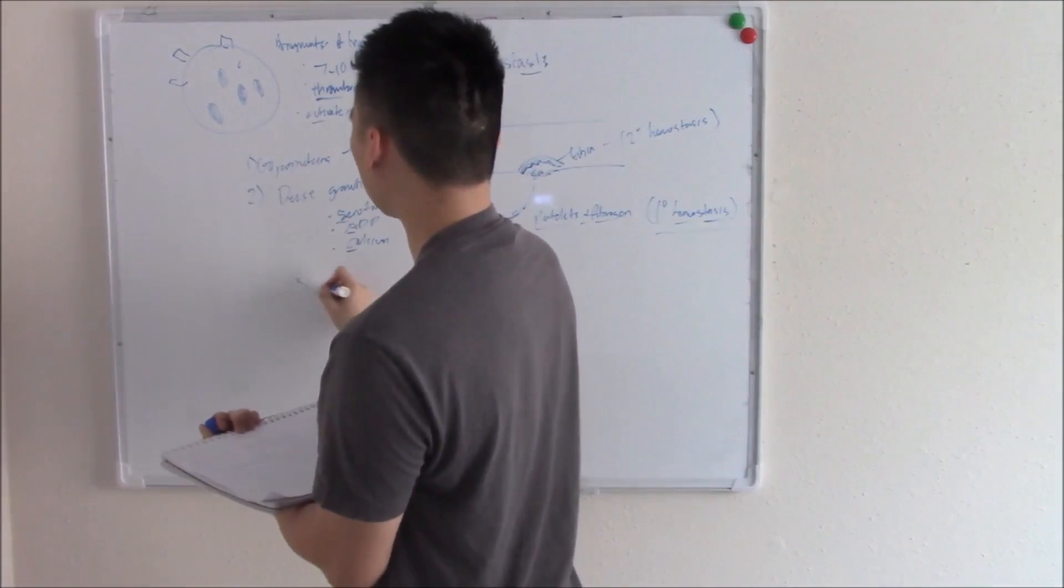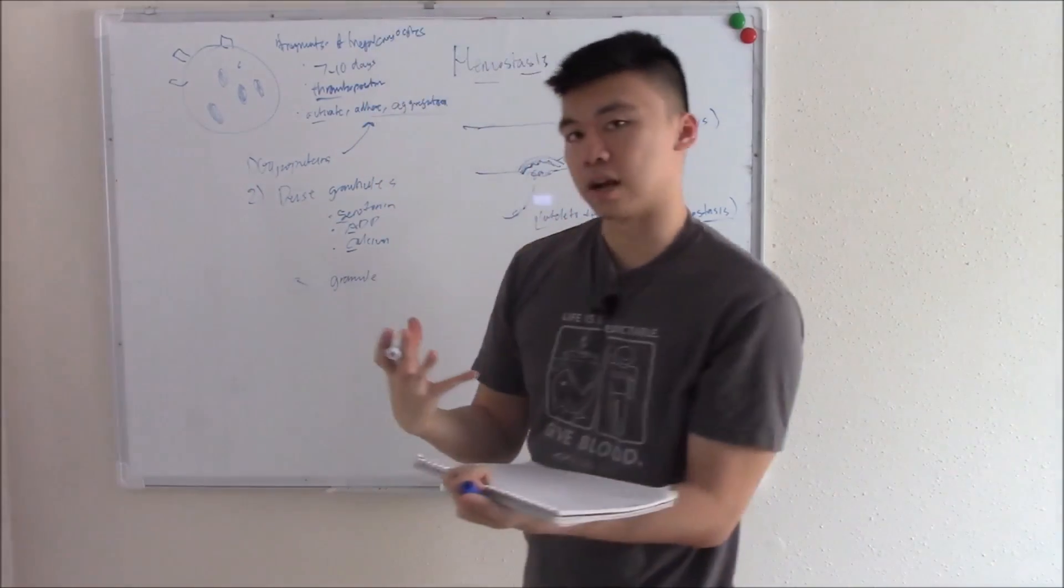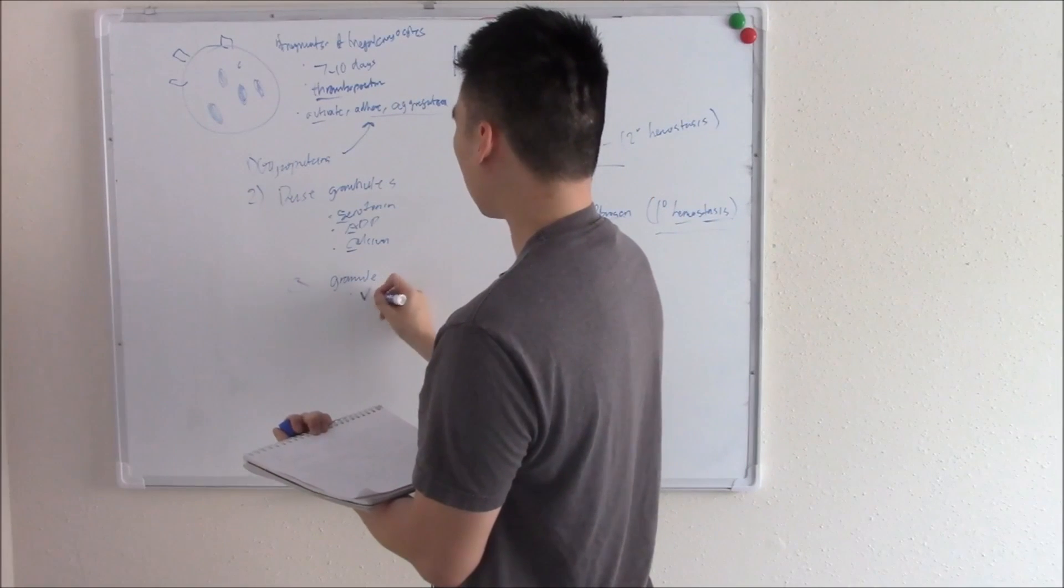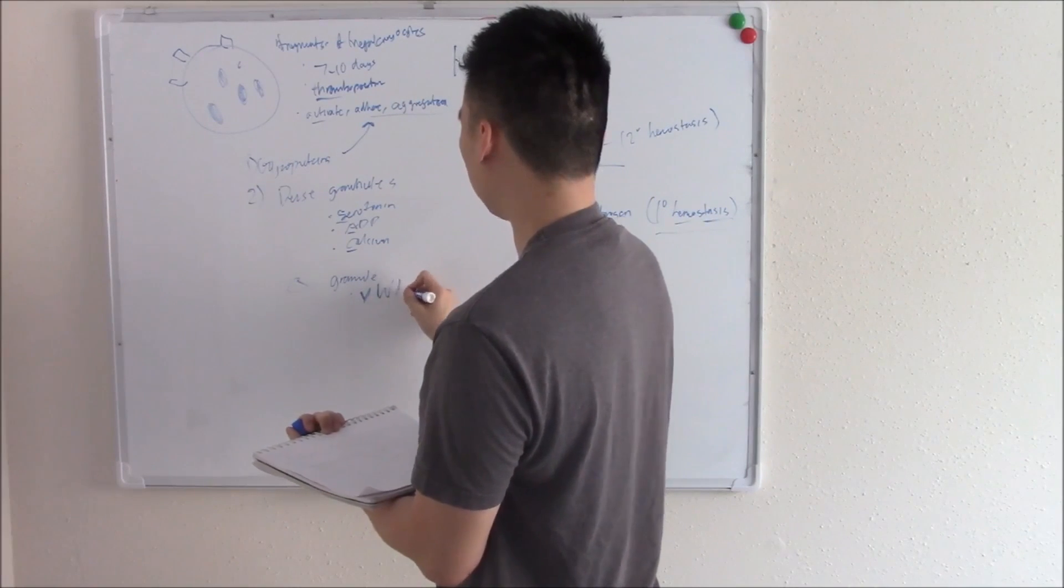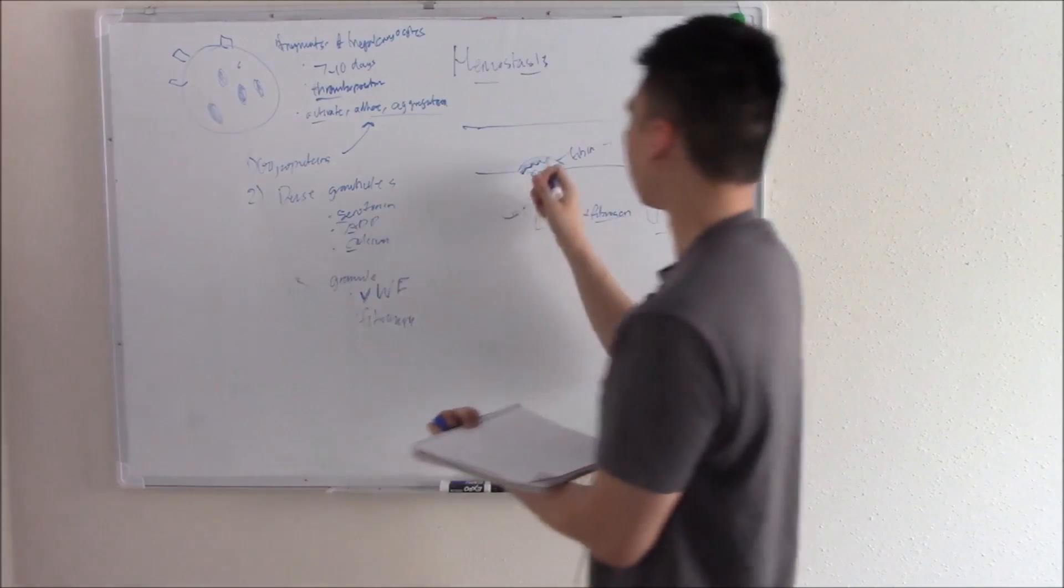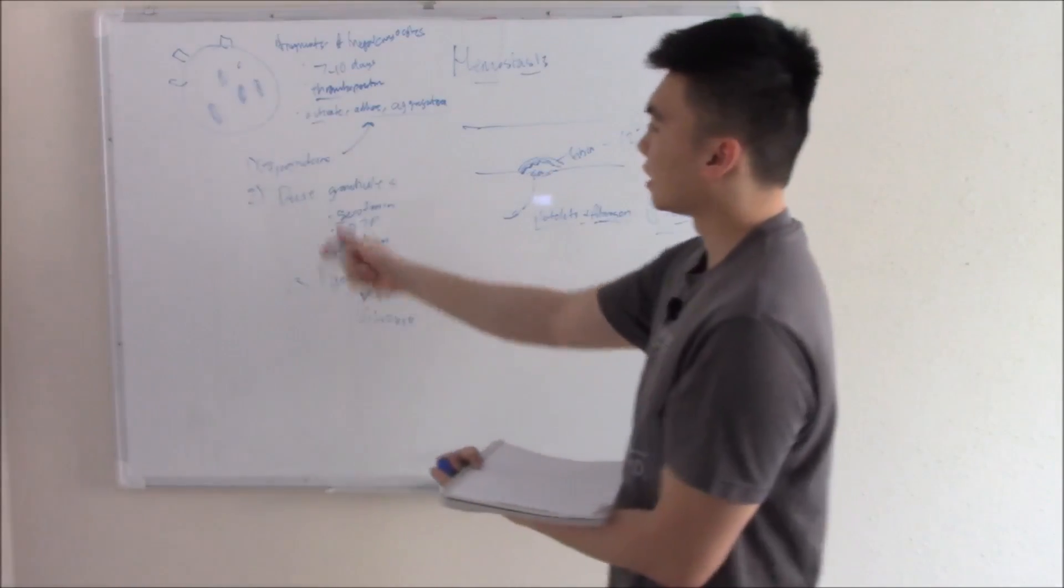Another type of granule is alpha granule. Alpha granule contains von Willebrand factor, which I will tell you what that is in our coming videos, and fibrinogen. That's our drape, that's what we're looking for.